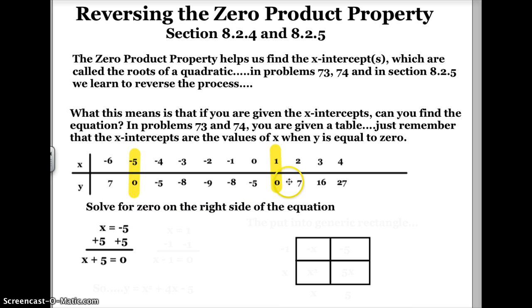Now, my other point is x is equal to 1. So I'm going to do the exact same thing here. If x is equal to 1, I'll subtract 1 from both sides, and I get x minus 1 is equal to zero.